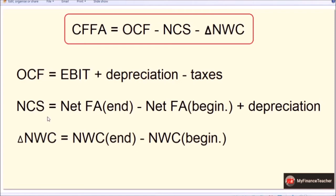For net capital spending, consider a desk example: I have three desks in December at the end of the year, and I had two desks in January at the beginning. During the year, one desk was broken down and written off. How many desks did I buy? Two desks. The formula is: net fixed assets at end of year minus net fixed assets at beginning of year, plus depreciation. That gives your net capital spending formula.